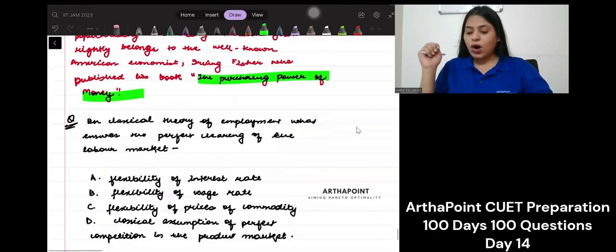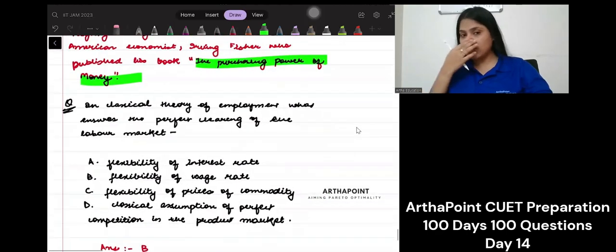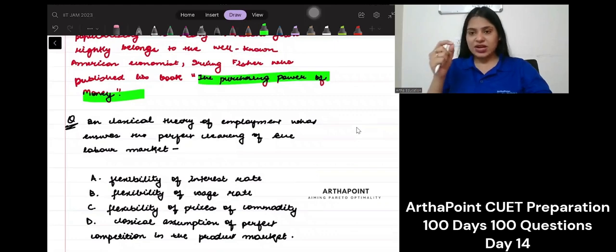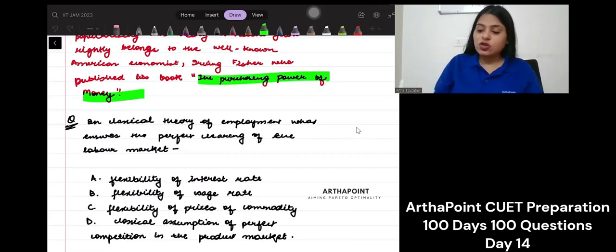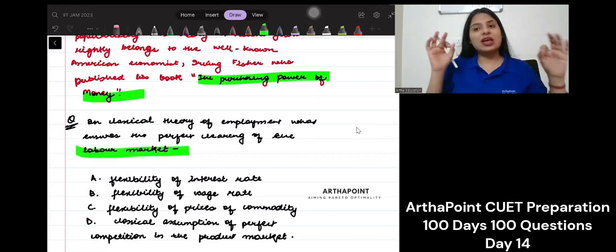Now I'm leaving one question to you and I want you to answer this question. Please write down in the comment section below what you think the answer is. In classical theory of employment, what ensures perfect clearing of the labor market?